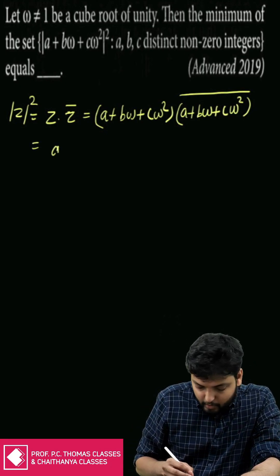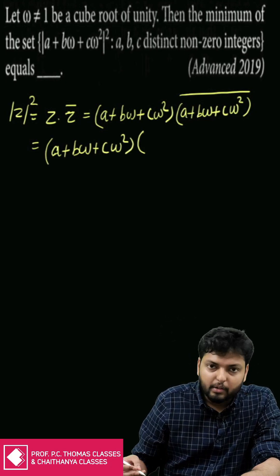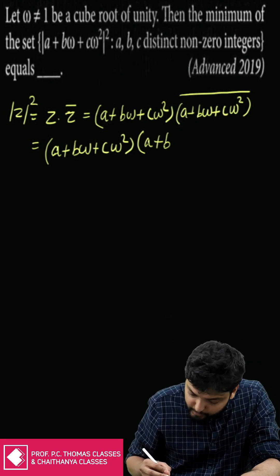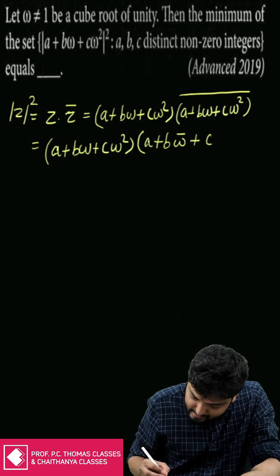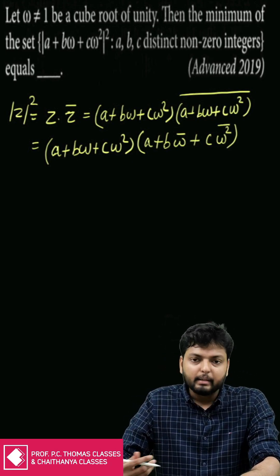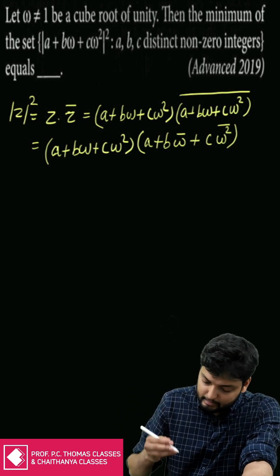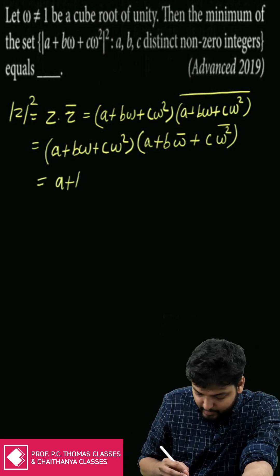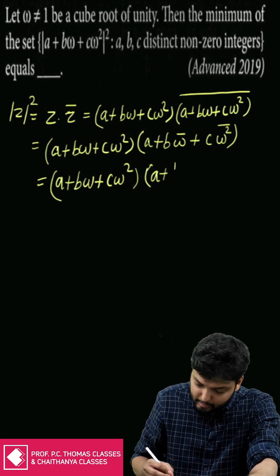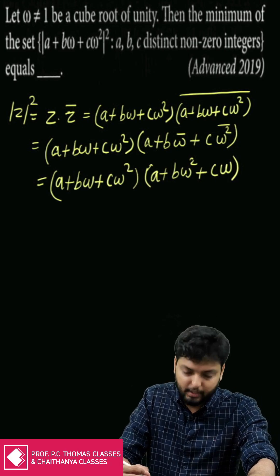This equals (a + bω + cω²) into individual conjugates. So a conjugate is a itself, then we have b omega conjugate plus c omega square conjugate. We know that omega and omega square are conjugates of each other, so we get (a + bω + cω²)(a + bω² + cω).